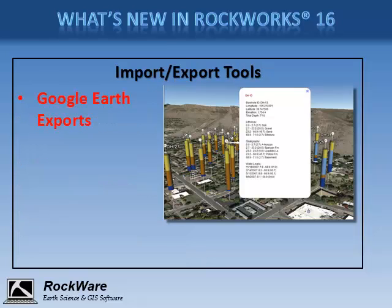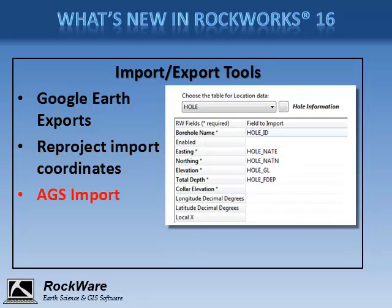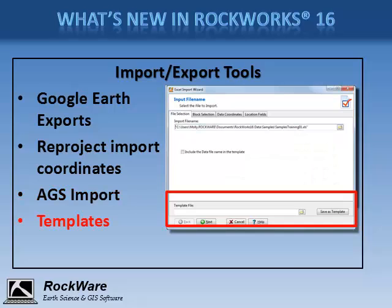There are many new import and export tools in RockWorks 16. You can easily export your 2D and 3D diagrams to Google Earth. We've added coordinate conversions for all data imports, a new AGS format import for geotechnical data, and you can save import templates for many of the import programs to simplify repeated imports of similar files.